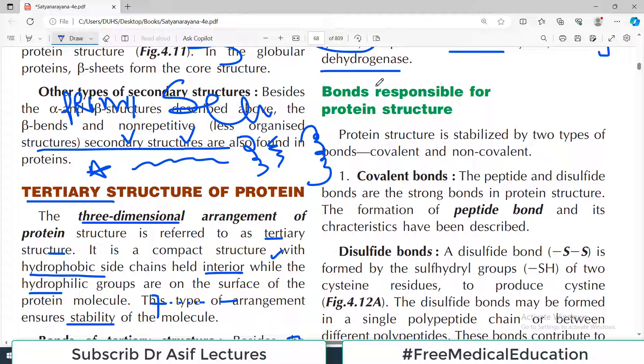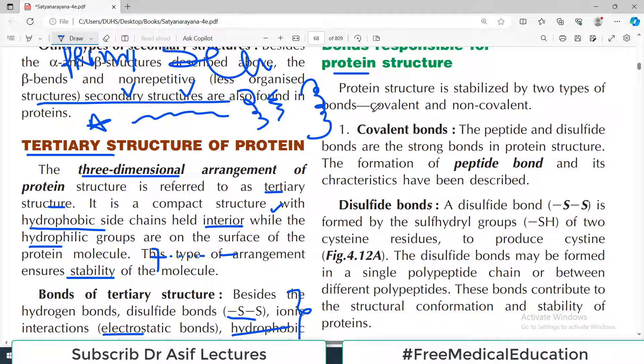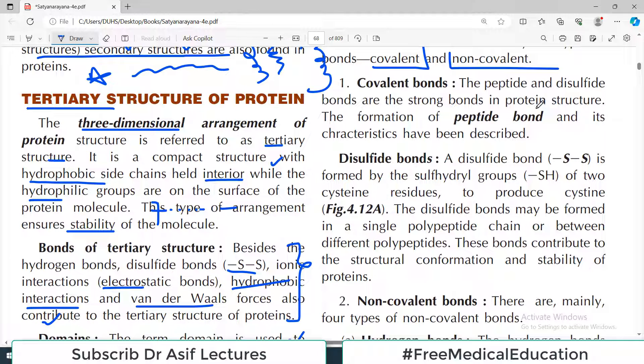The concept of bonds which are responsible for protein structure is important. There are two types of bond categories. One is called covalent bond, the other is called non-covalent bond. The covalent bond, for example, can be peptide bonds. When amino acid joins amino acid, that bond is known as peptide bond. That's an example of a covalent bond.